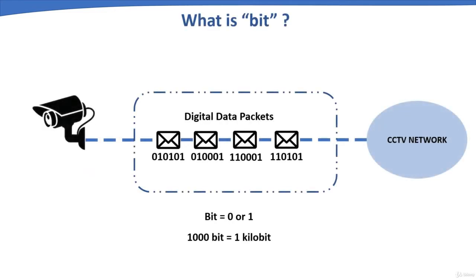This chapter covers bitrate. When an IP camera captures images, they are converted into digital packets that travel on the network. This type of data consists of bits that computers and networking devices recognize as zeros and ones. One bit equals zero or one, and one thousand bits equals one kilobit.